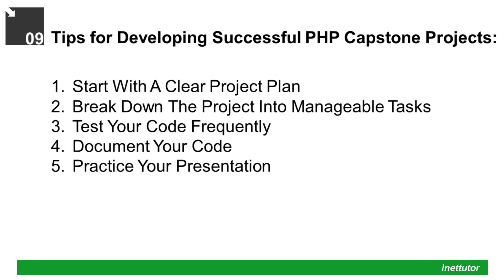Here are five tips for developing a successful PHP Capstone Project: 1. Start with a clear project plan. 2. Break down the project into manageable tasks. 3. Test your code frequently. 4. Document your code. 5. Practice your presentation.